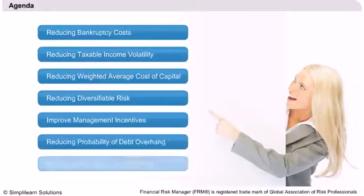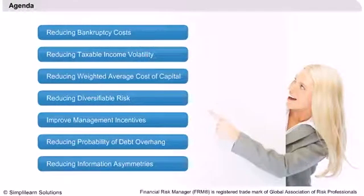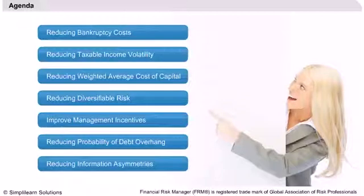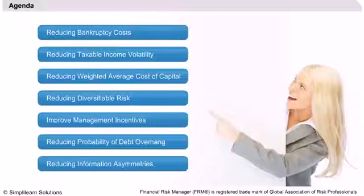Agenda: We will learn how managing risk reduces bankruptcy cost, income volatility, weighted average cost of capital, probability of debt overhang, and information asymmetry. All these factors contribute to increasing the value of the firm, which is the basic aim for any firm and its shareholders.